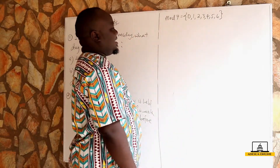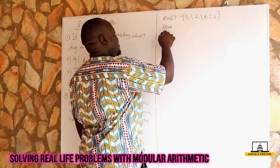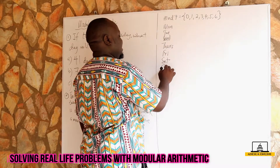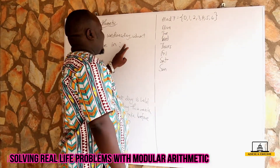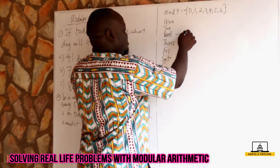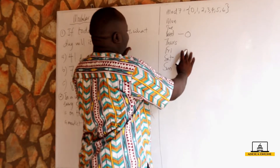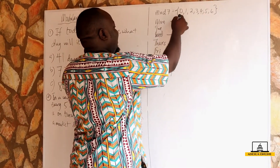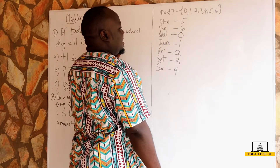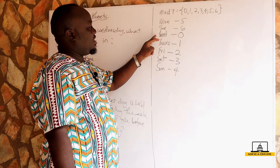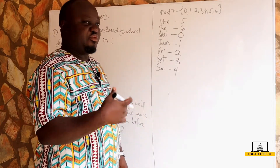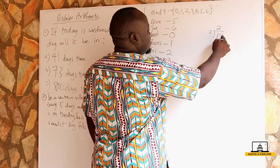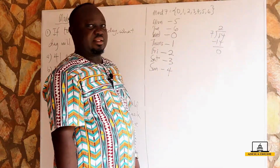Modulo seven has remainders zero, one, two, three, four, five, and six. The days of the week are Monday, Tuesday, Wednesday, Thursday, Friday, Saturday, and Sunday. If today is Wednesday, then Wednesday should have a remainder of zero, and the next days follow with remainders one, two, three, four, five, and six. If I asked you what day it will be in 14 days time and I divide 14 by seven, it gives remainder zero, which tells me it is Wednesday.